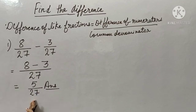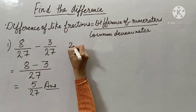So 8 minus 3 equals 5 upon 27 and this is your final answer. This is the difference of these two like fractions. Now one more question I am showing you.